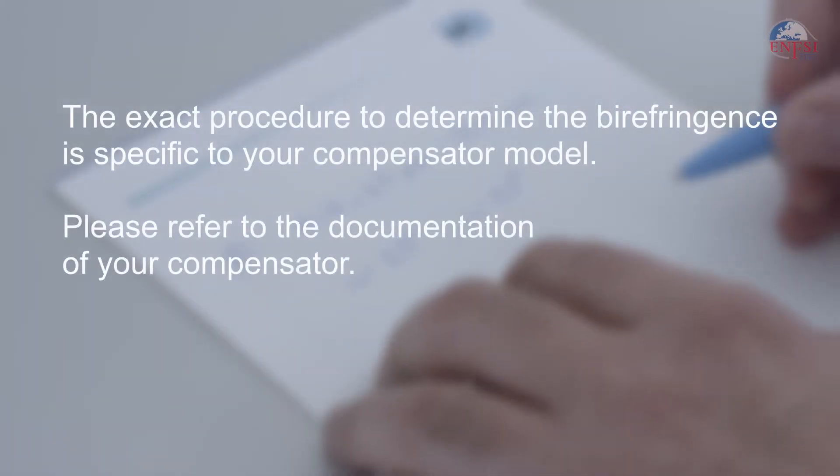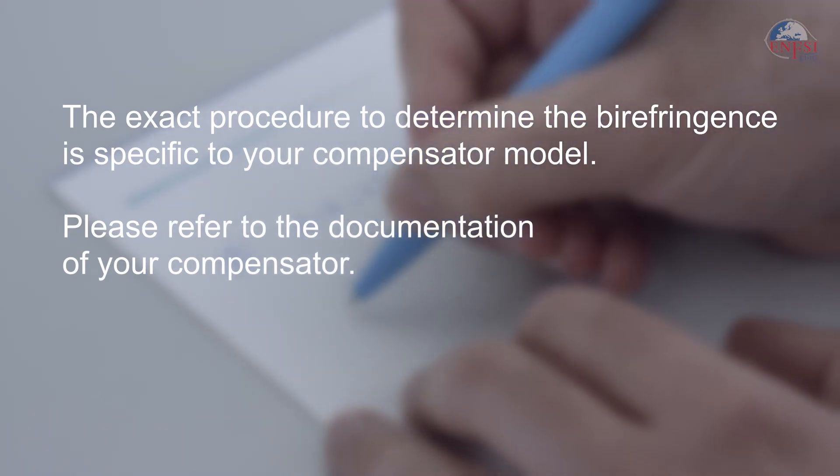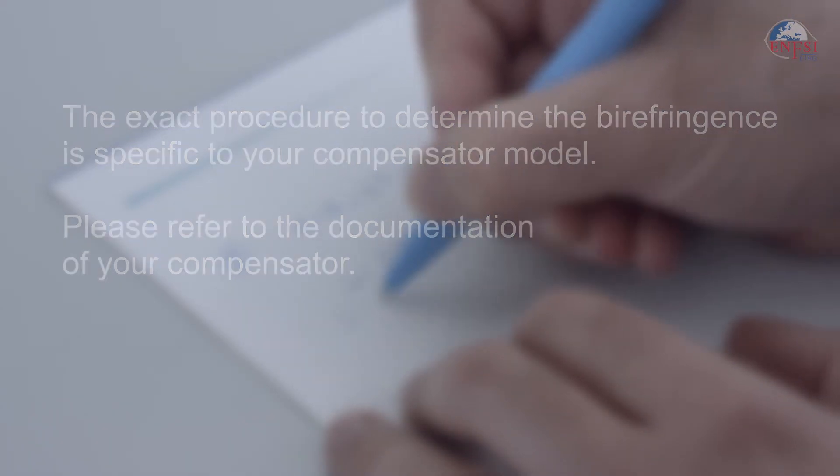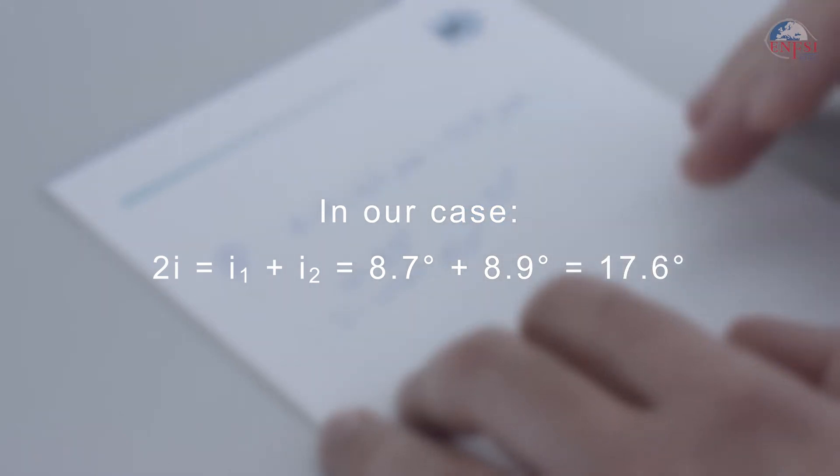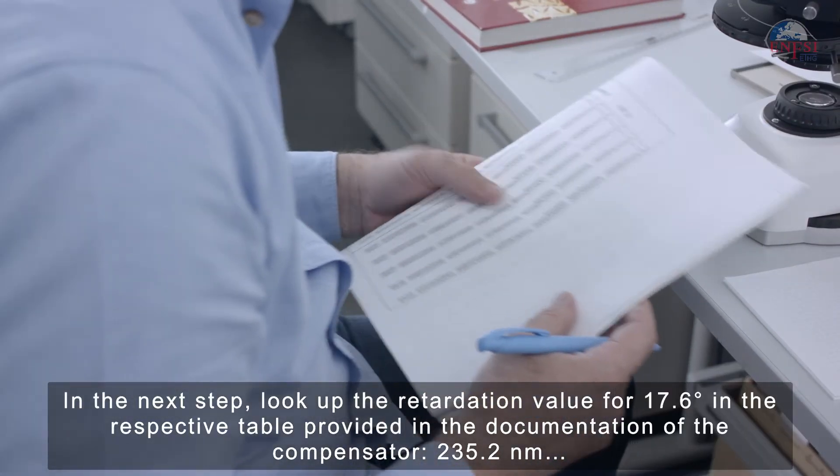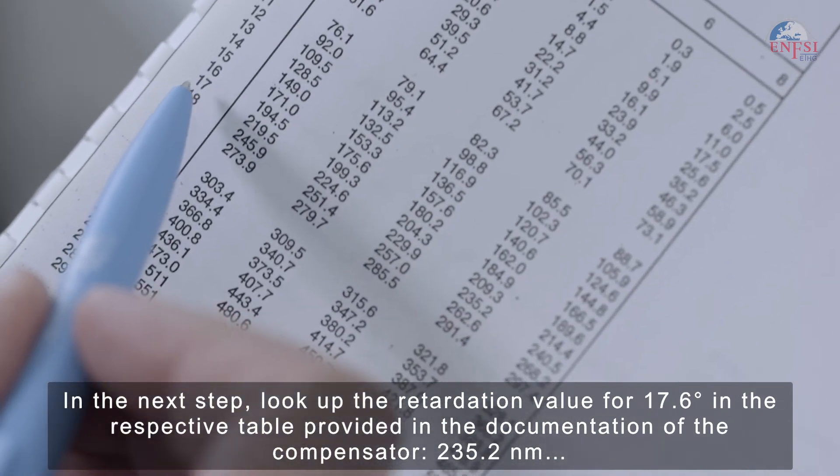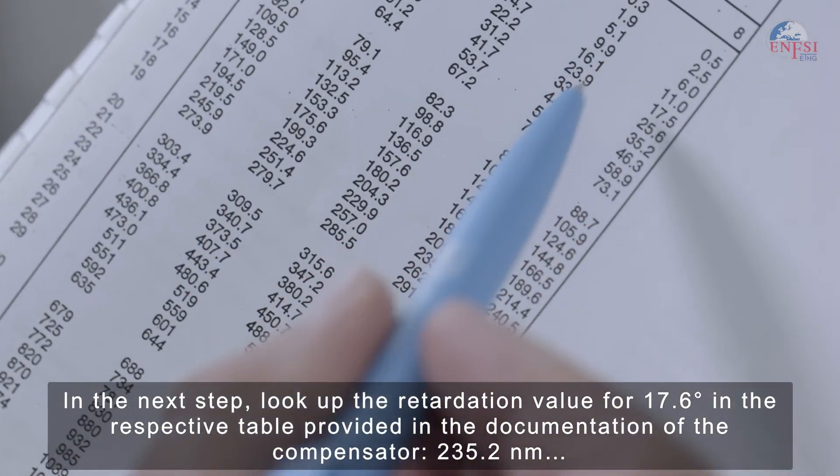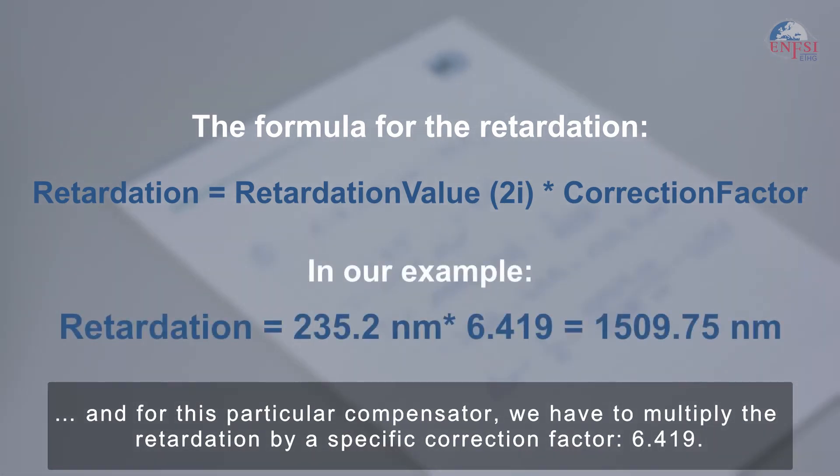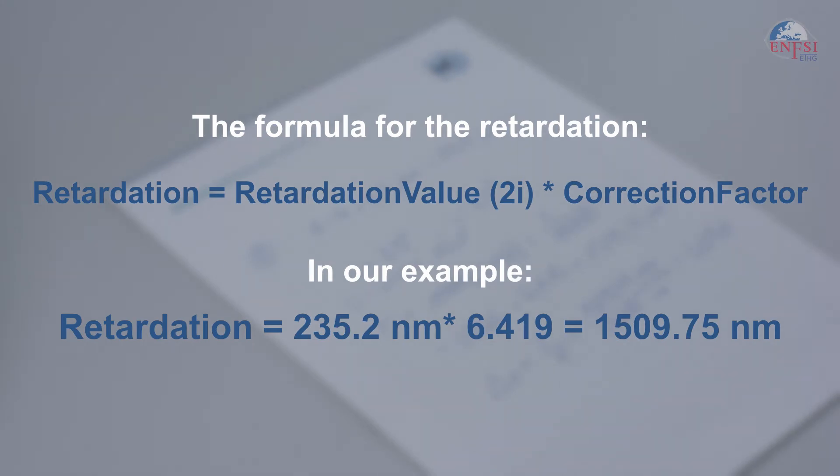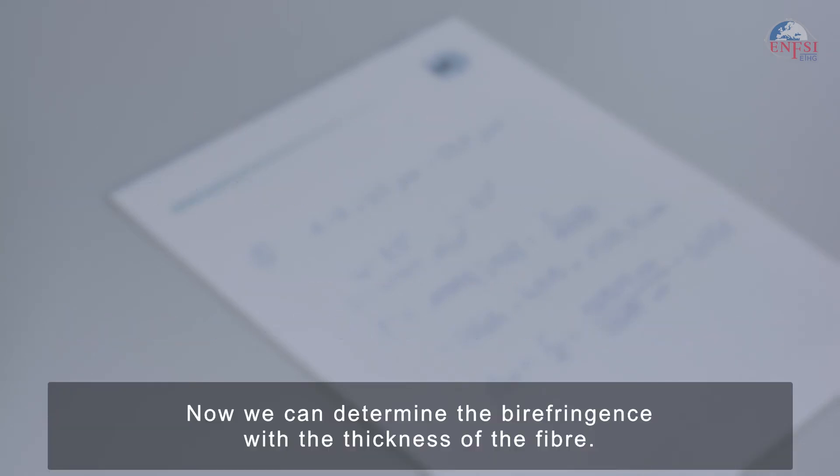The exact procedure to determine the birefringence is specific to the compensator model. Please refer to the documentation of your compensator. In our case, the first step is to add the two readings of the compensator, I1 and I2. 8.7 plus 8.9 degrees makes 17.6 degrees. In the next step, look up the retardation value for 17.6 degrees in the respective table provided in the documentation of the compensator. 235.2 nanometers. And for this particular compensator, we have to multiply the retardation by a specific correction factor, 6.419.